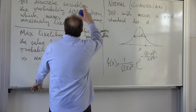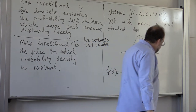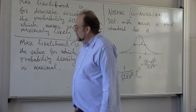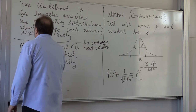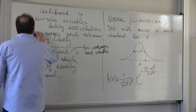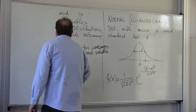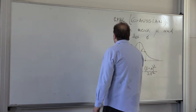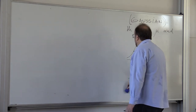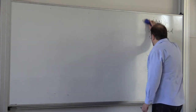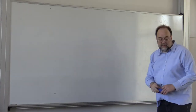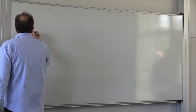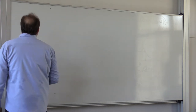So let's simply compute: in order to find the maximum likelihood estimation, we have to differentiate with respect to mu and sigma and set the partial derivatives to zero. So df over d mu is equal to what?